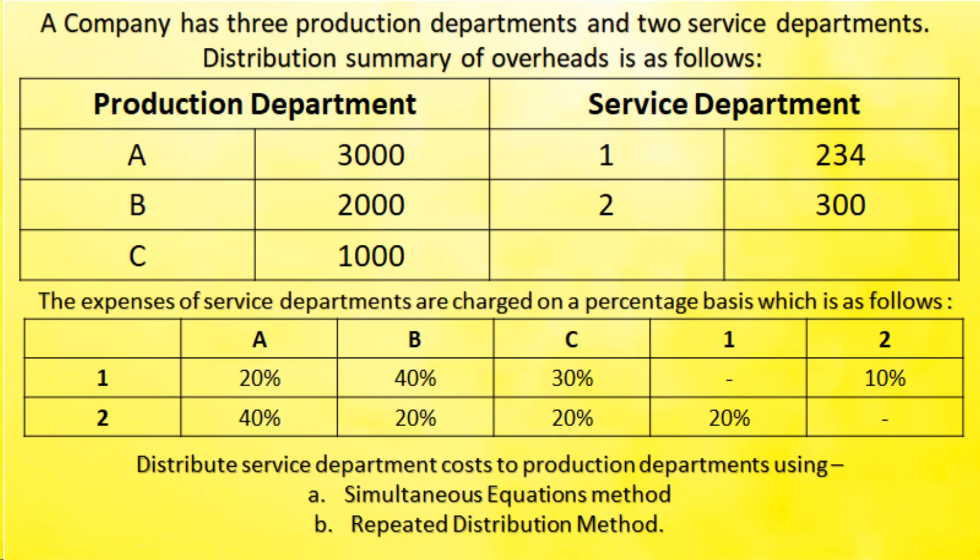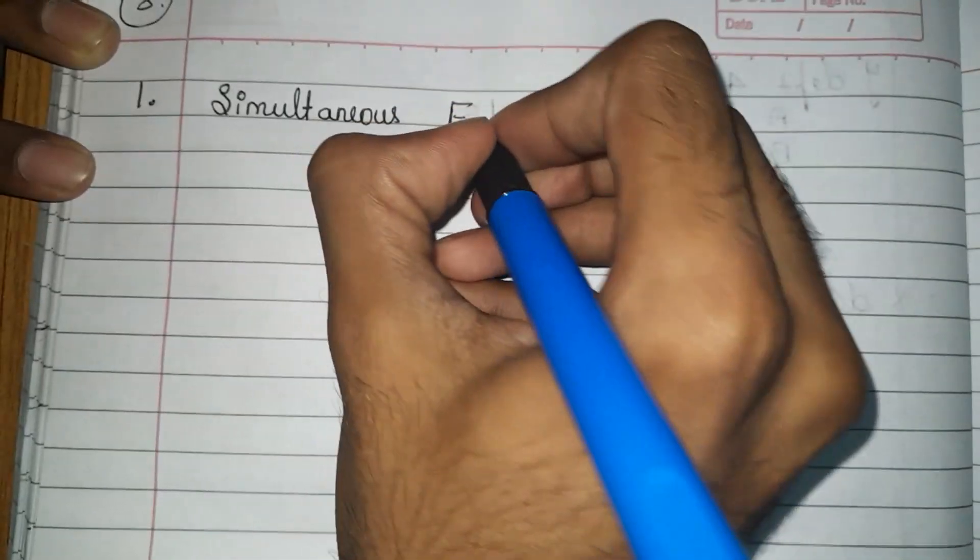The production department costs from primary distribution are: A = 3000, B = 2000, C = 1000. Service department 1 = 234 and service department 2 = 300. The expenses of service departments are charged on a percentage basis. We need to solve this by both the simultaneous equations method and the repeated distribution method.